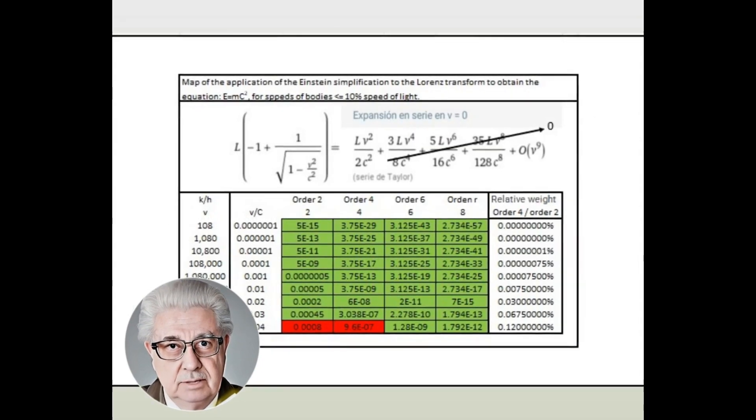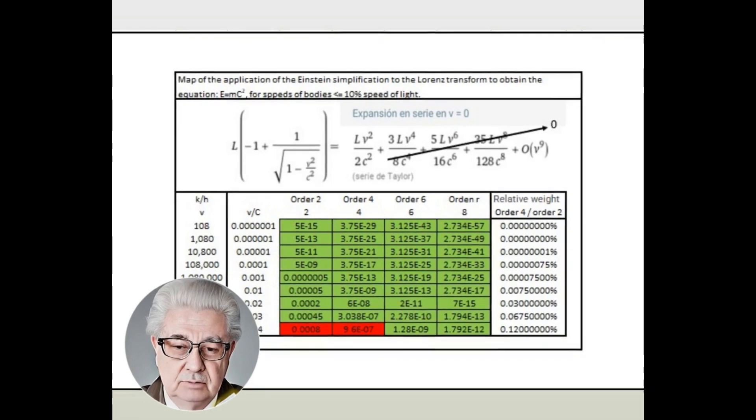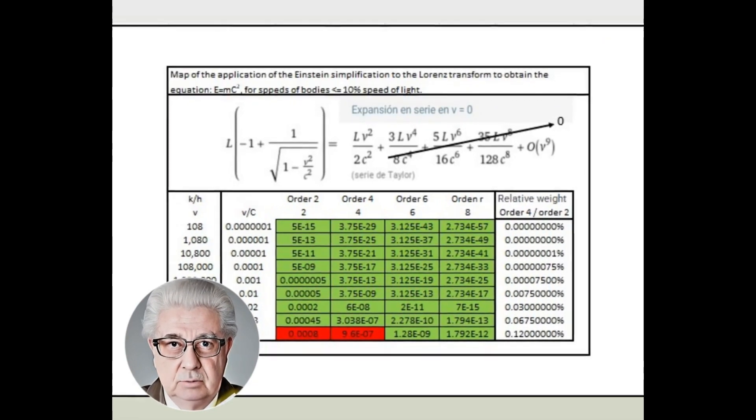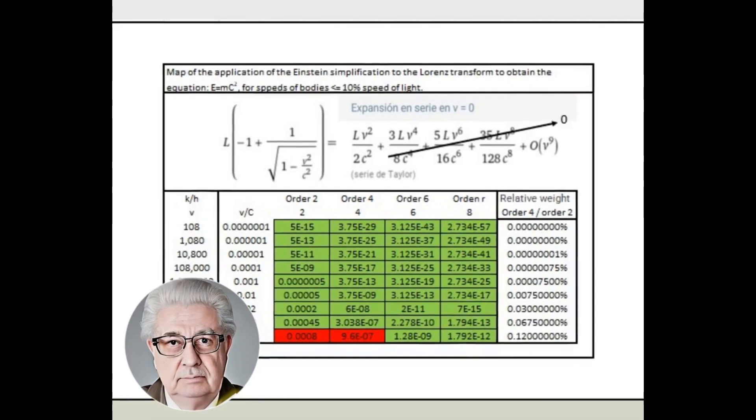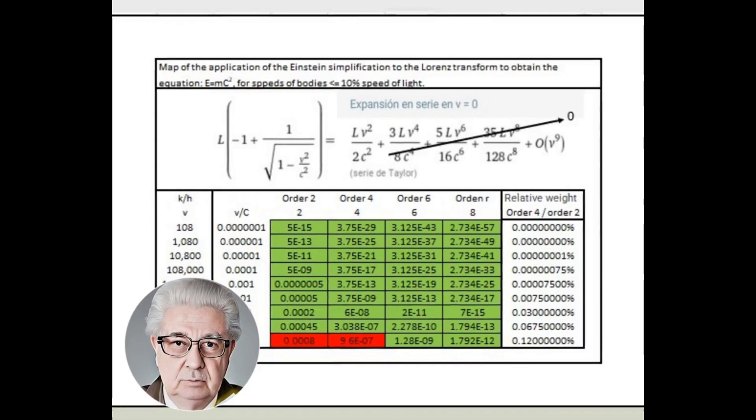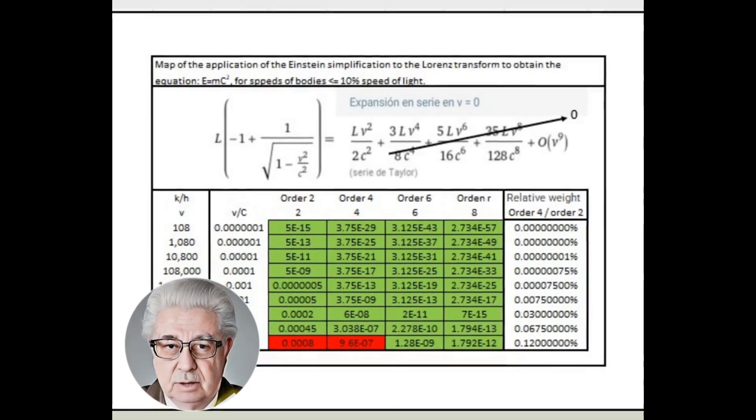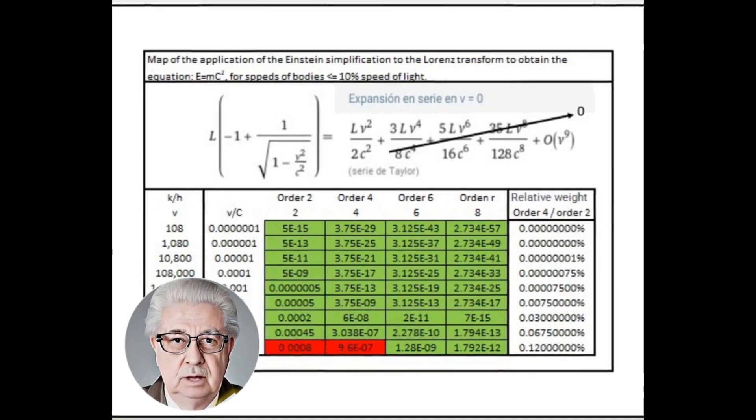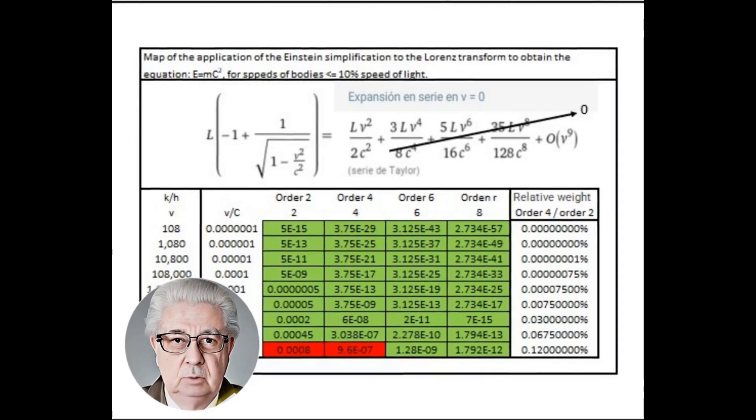Next, we mathematically and physically support the application of the terms of the Taylor expansion to expression 4 to make Einstein's equation viable in the field of relativity. A table was made where the impact of Taylor's terms on the physical phenomenon of bodies or masses or electromagnetic energies that move in relation to a reference system at rest is measured, obtaining a map of applicability of the approximation.